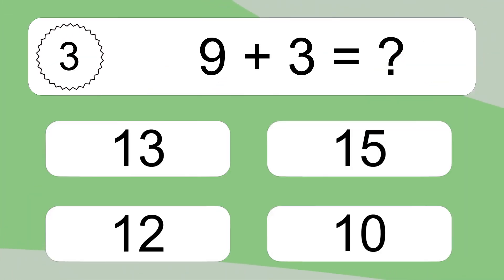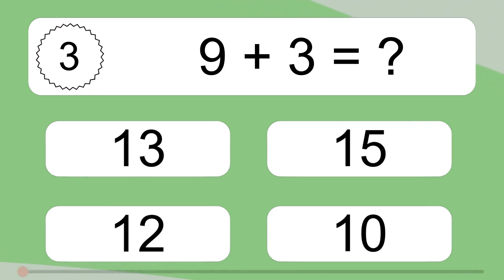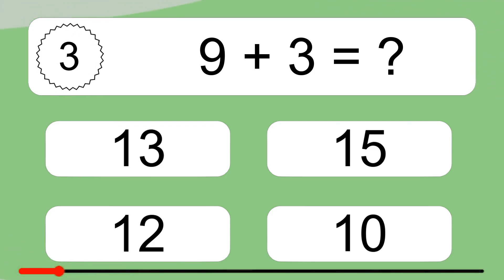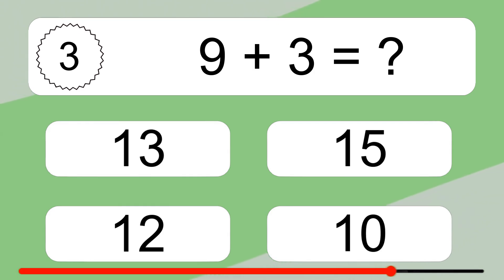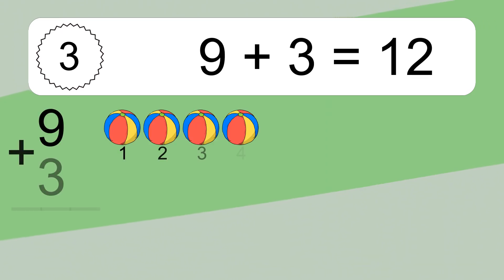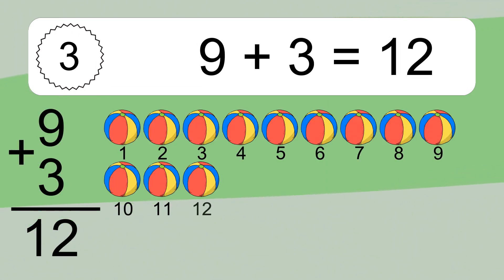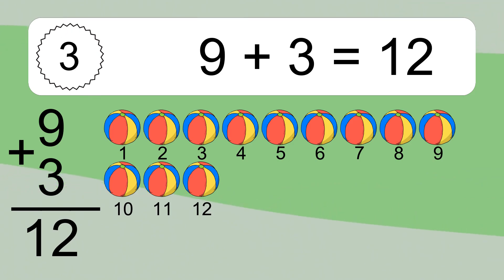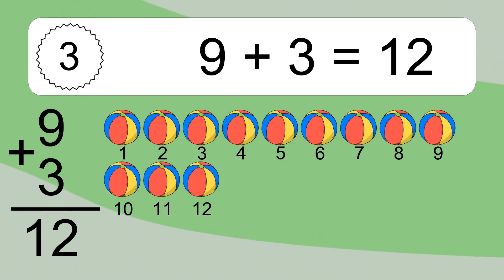9 plus 3 equals what? 9 plus 3 equals 12. Let's count it: 1, 2, 3, 4, 5, 6, 7, 8, 9, 10, 11, 12.